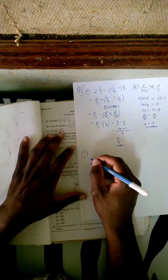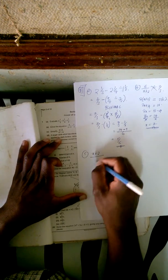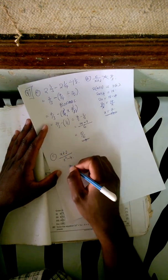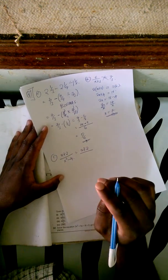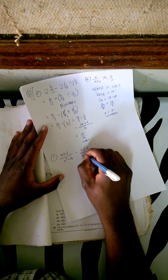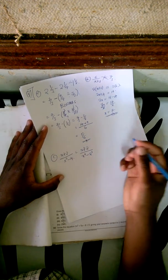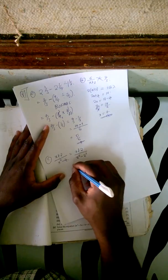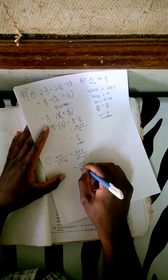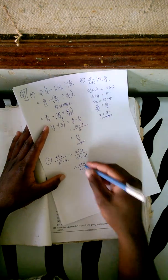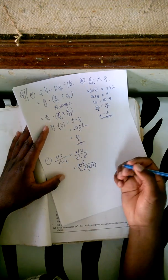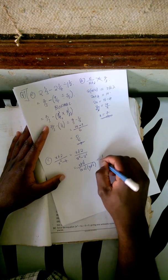Then question 1c says simplify (x plus 2) over (x squared minus 4). The numerator is fine. The denominator is a difference of two squares, so we write it as (x minus 2)(x plus 2). The (x plus 2) in the numerator and denominator cancel, therefore we have 1 over (x minus 2). This is our answer.